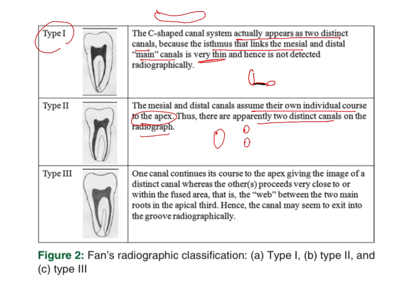Type 3 is where one canal continues its course to the apex giving the image of a distinct canal, whereas the other proceeds very close to or within the fused area — that is, the web between the two main roots in the apical third. Simply put, you have your distal canal and mesiolingual or mesiobuccal appearing as two separate canals; however, as you go towards the radiographic apex, what appear to be two separate canals end up becoming fused into one large canal. That is type 3.